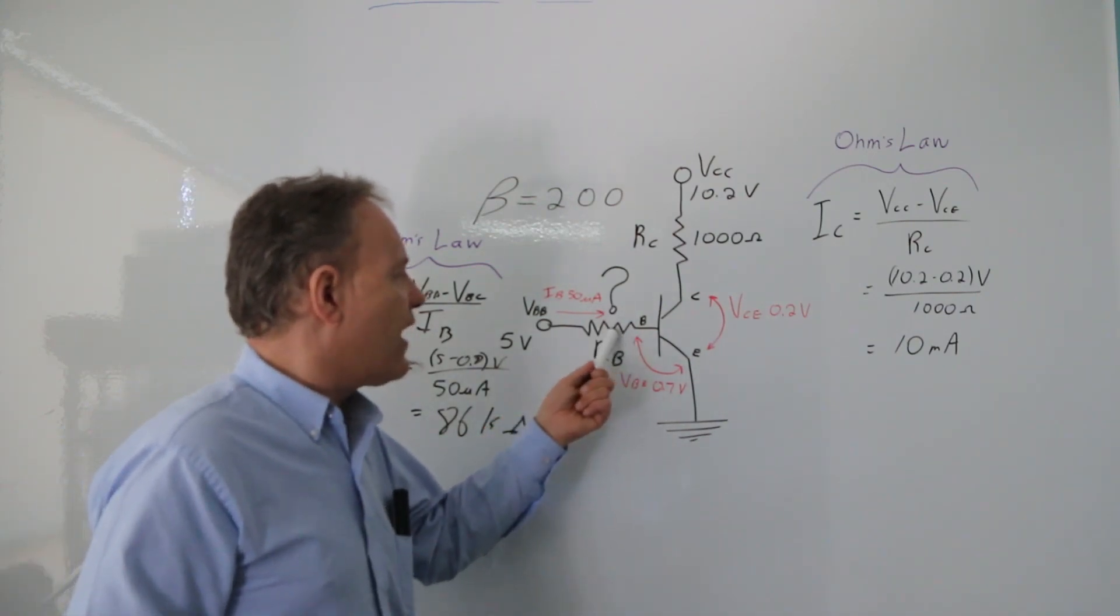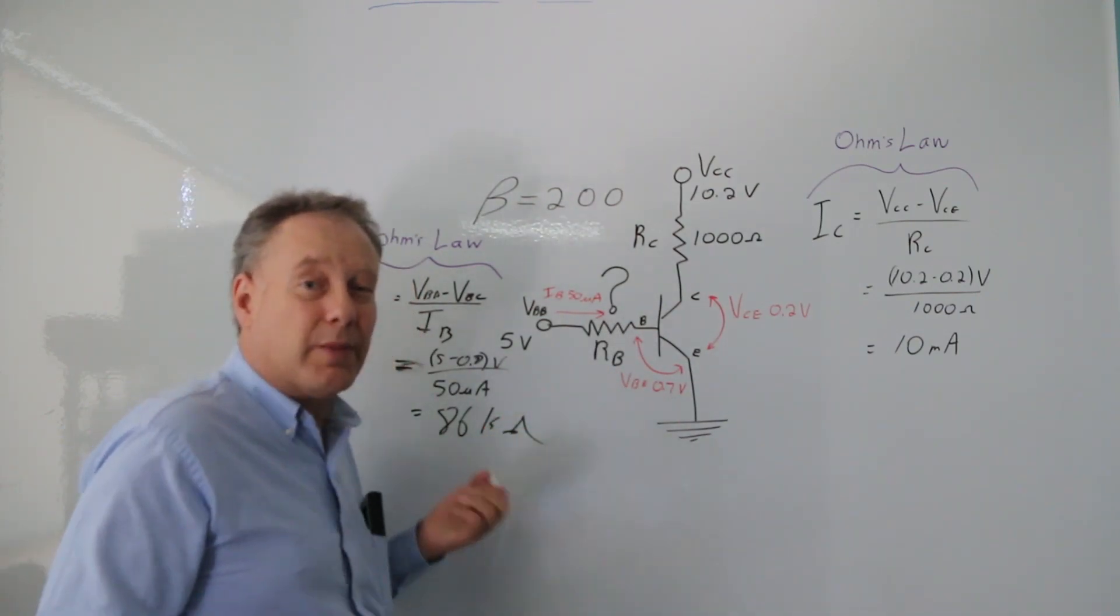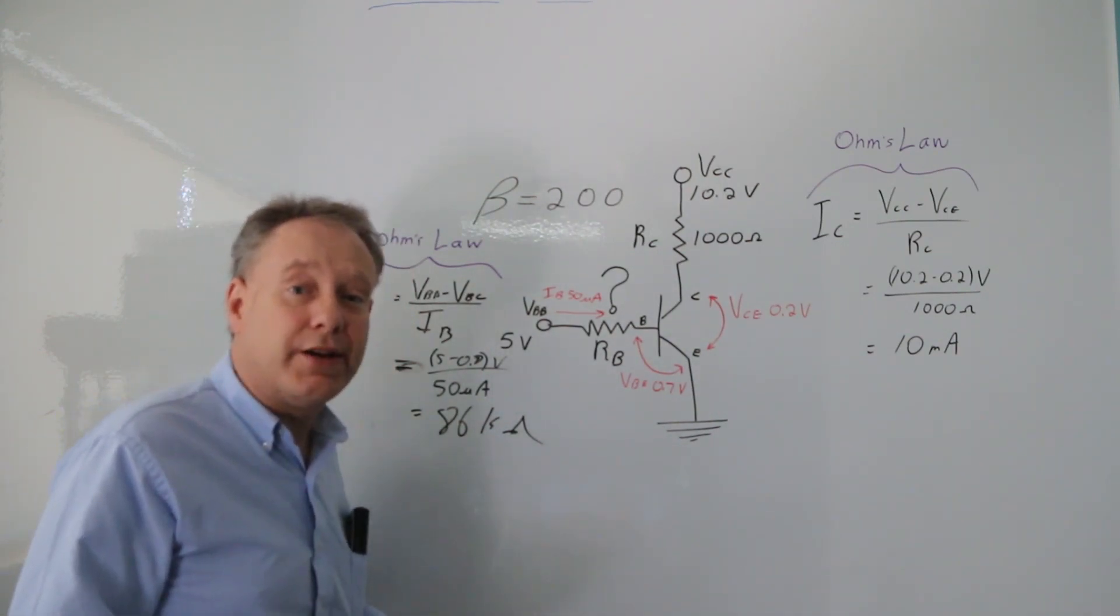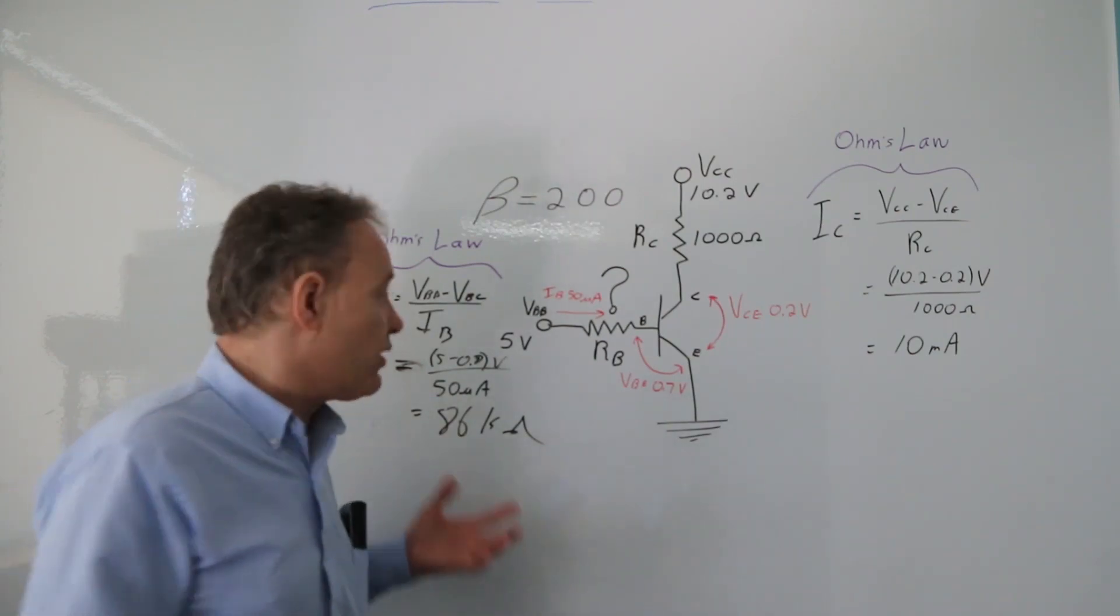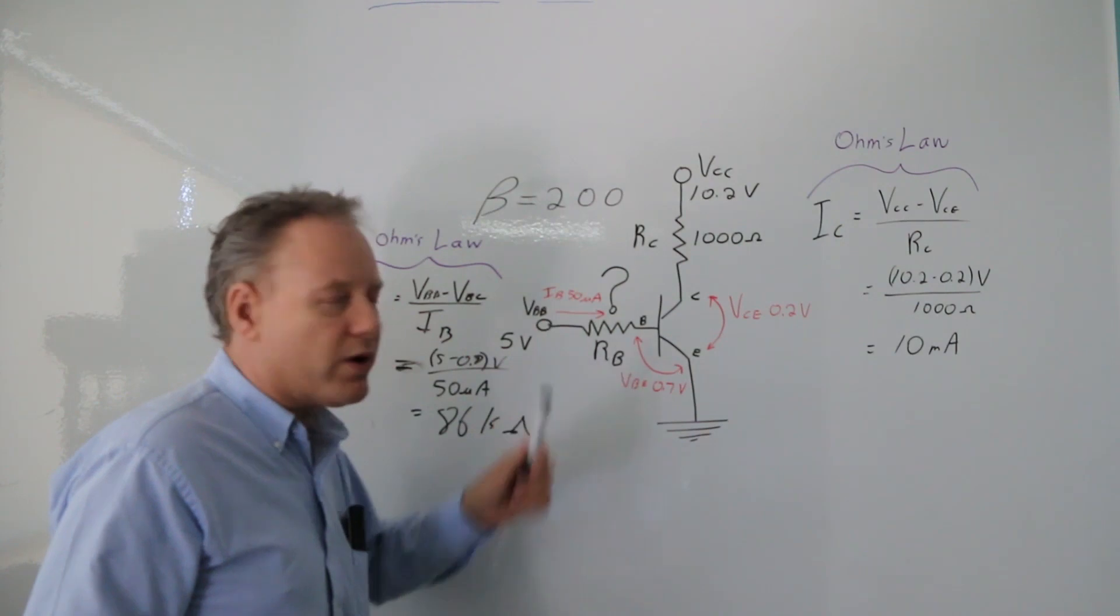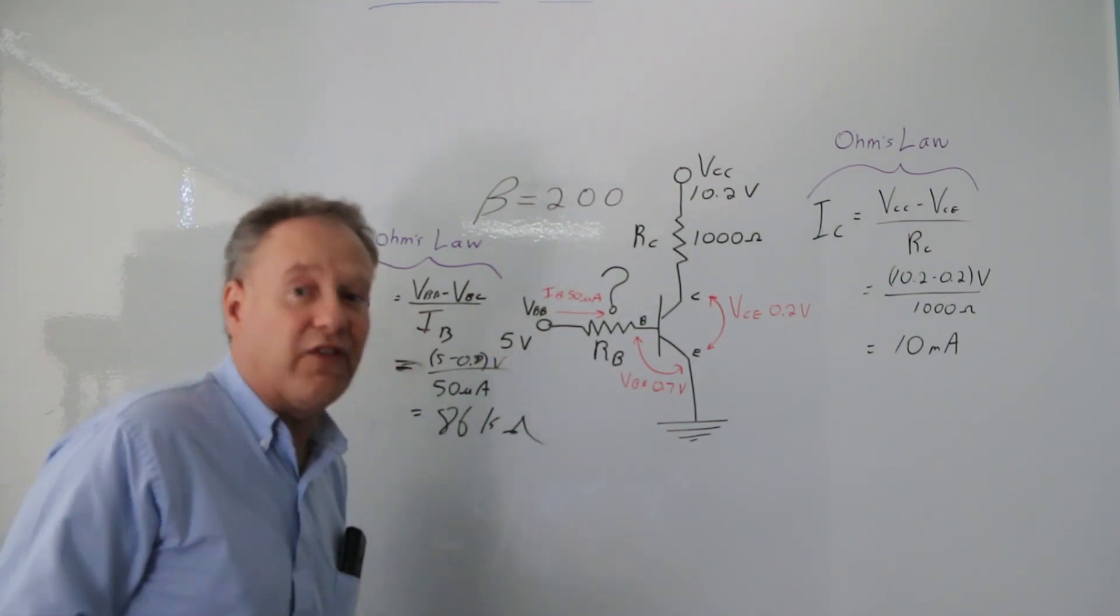So what I'm actually going to do is choose a resistor here that's probably like half of that, or maybe a little bit more than half. So like a 50k is probably good. So I think that's how you do that. Now if you want, you can put a 50k in there and recalculate it. It's going to be more than 50.